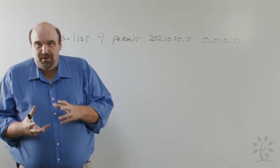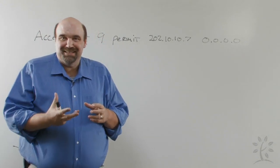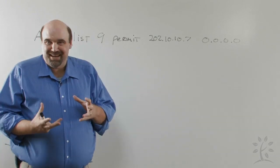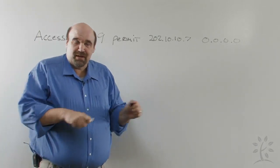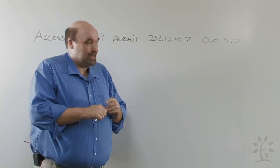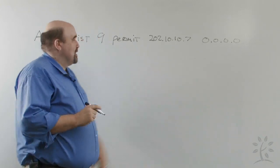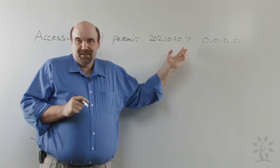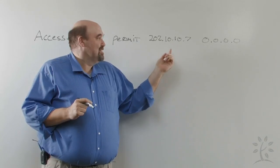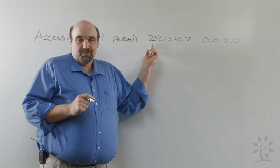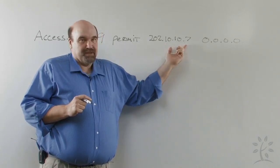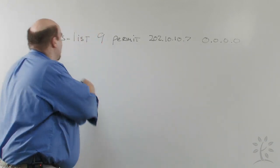To work with Wild Card Masks, the idea is I can simplify access list lines. So if I were to add another access list number, let's say I want to permit 202.10.10.6 in addition, instead of just permitting .7, I can do this.